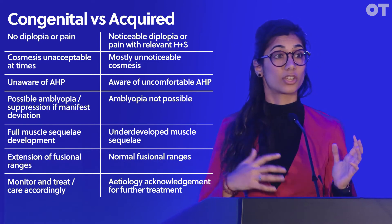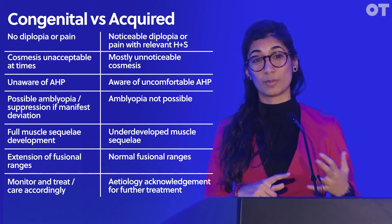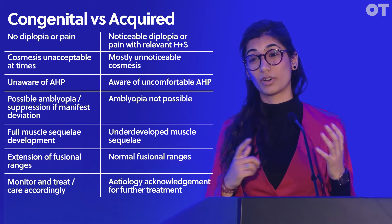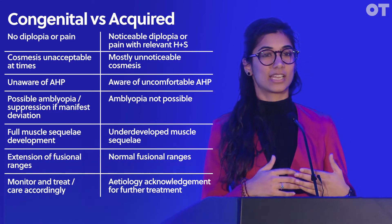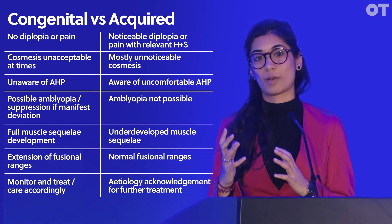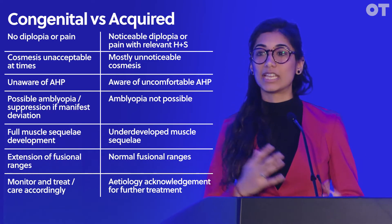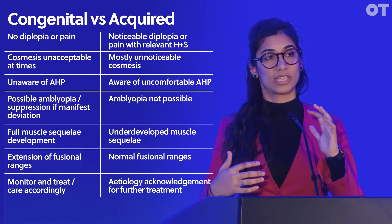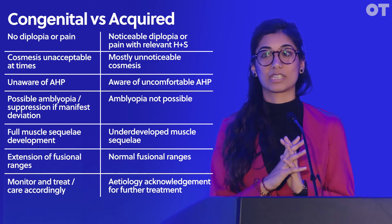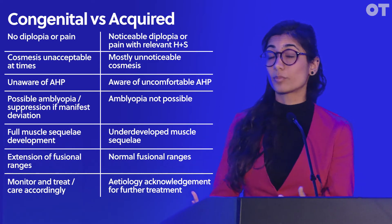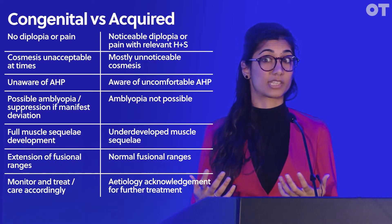There are factors that help differentiate just from taking a good history. For example, if something happened a week ago, the patient can tell you a specific time and date — they now have an abnormal head posture, their neck hurts, but they're not seeing double anymore. A congenital deviation is different: they will know no different; that's all they know.